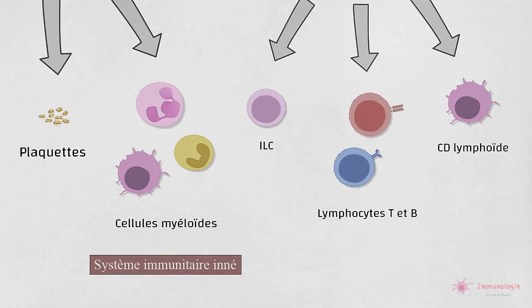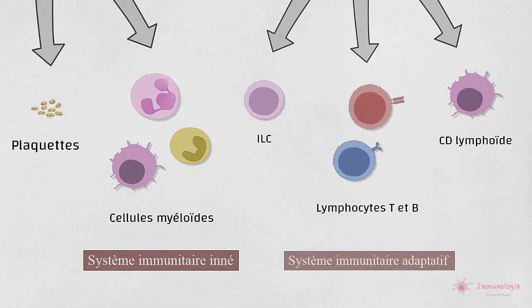Les lymphocytes T et B sont membres de la réponse immunitaire adaptative et génèrent une réponse immunitaire spécifique à l'antigène qui donne lieu à une mémoire immunitaire. Les ILC ont des caractéristiques à la fois de cellules innées et adaptatives.